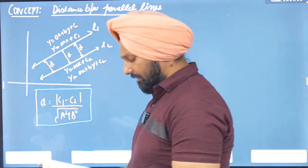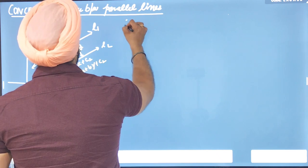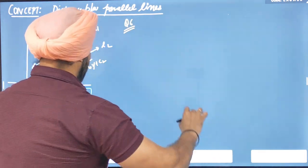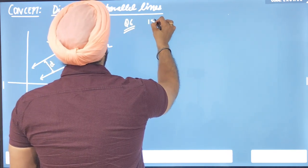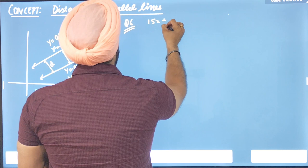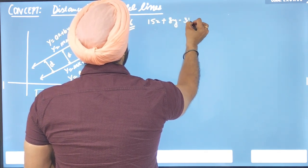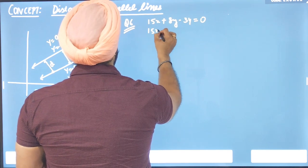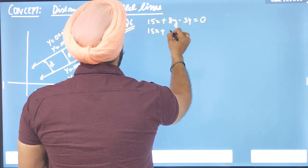Question number six: Find the distance between the two parallel lines 15x plus 8y minus 34 equal to 0 and 15x plus 8y plus 31 equal to 0.